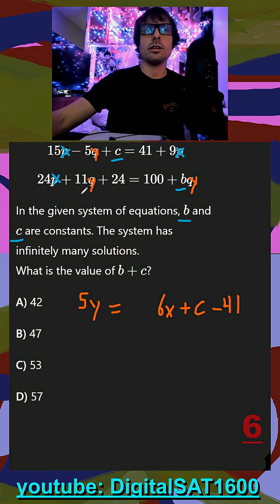For our second one, we already have 11y, so I subtract by over, giving us 11y minus by. That equals the 100 on the right side minus 24, which is 76. We have positive 24x, so we subtract it to the other side, giving us negative 24x.